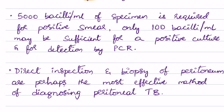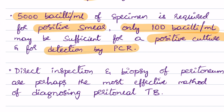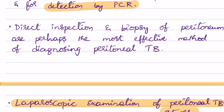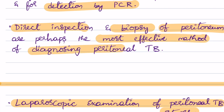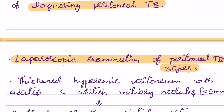Regarding other diagnostic tests for TB peritonitis: 5000 bacilli per ml of specimen is required for a positive smear, whereas only 100 bacilli per ml may be sufficient for a positive culture or for detection by PCR. The best investigation so far is direct inspection and biopsy of the peritoneum, which are the most effective methods for diagnosing peritoneal tuberculosis.